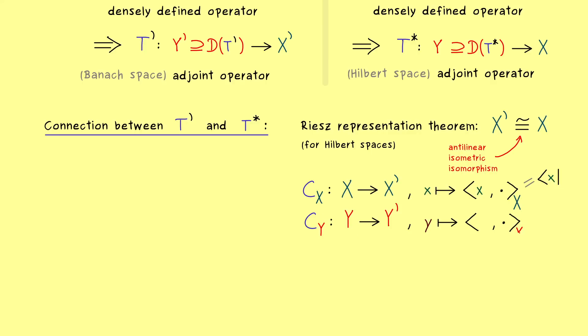It's exactly the same, but there we have to use the inner product in Y. However, also there, let's shorten the notation. Okay, and now with these two antilinear maps, it's quite easy to make our connection between the two adjoints T' and T*.